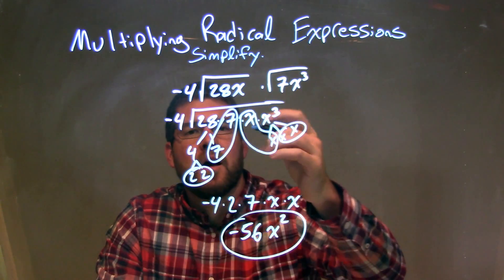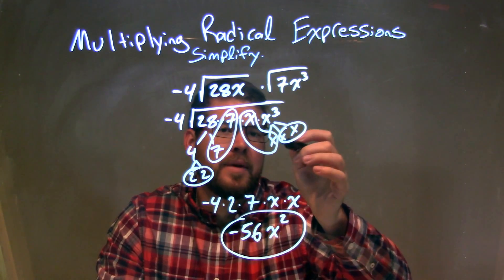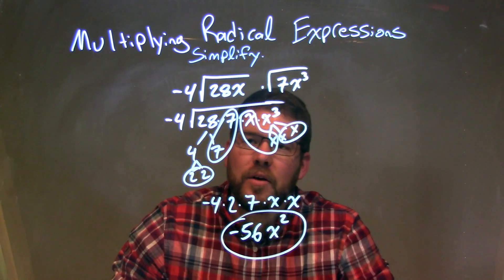We broke that down a little bit. 28 being 2 times 2 times 7, and then x to the third would be x times x times x. We circled our pairs.